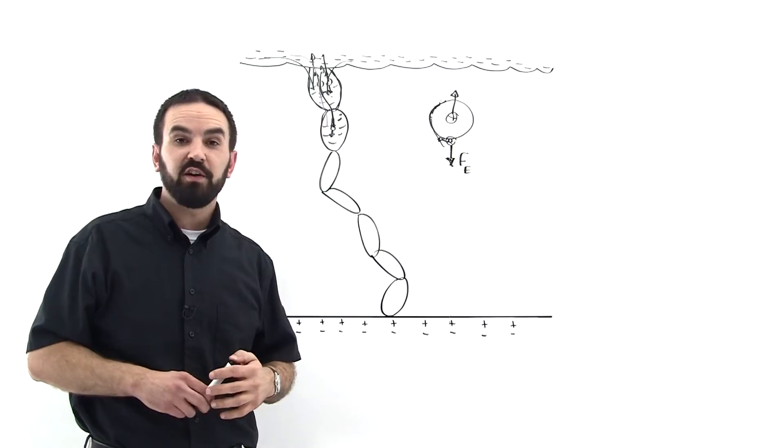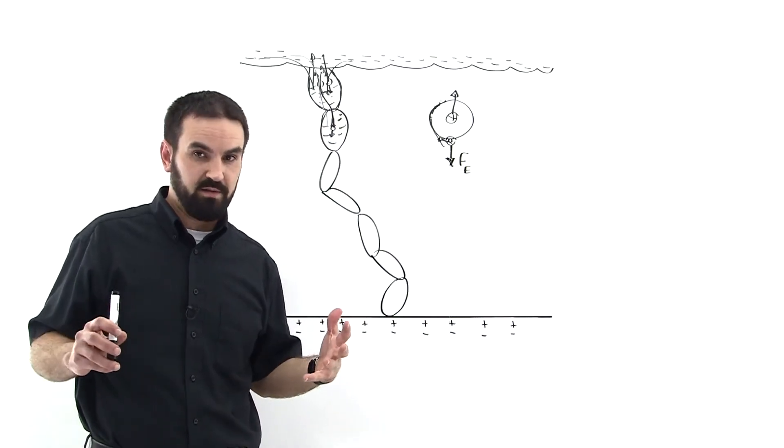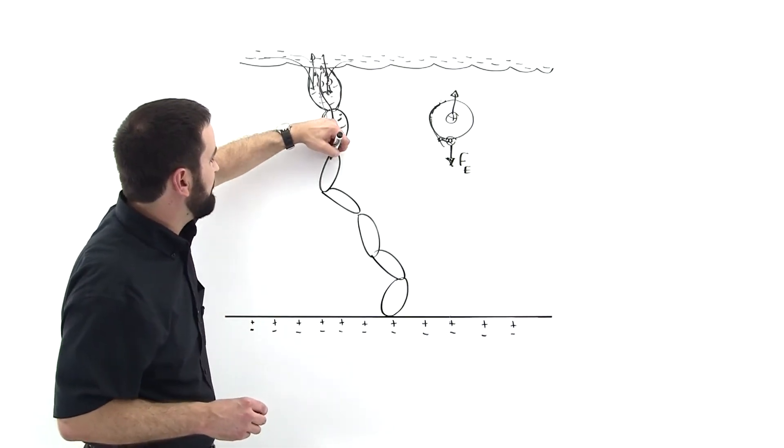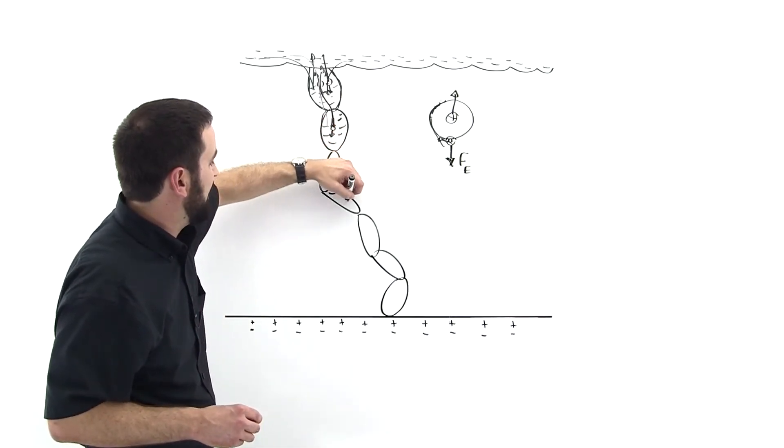The earth, that is. And the earth is a huge conductor. Now that this thing has touched the earth, we've got this column basically filled with electrons.